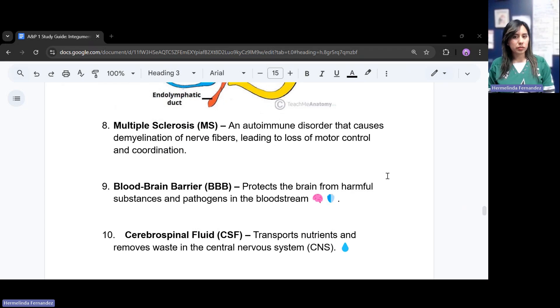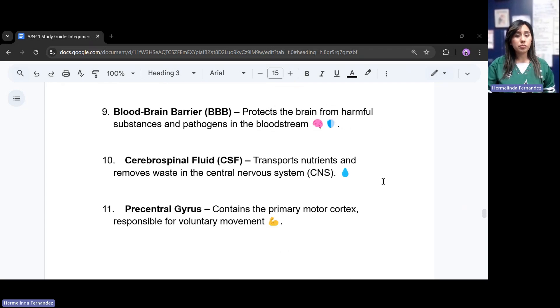MS, or multiple sclerosis, is an autoimmune disease that causes demyelination of the nerve fibers. What this does is leads to loss of motor control and coordination in your patient. Blood-brain barrier, BBB, protects the brain from harmful substances and pathogens in the bloodstream. The cerebral spinal fluid, CSF, transports nutrients and removes all those waste that are not needed in the central nervous system, the CNS.